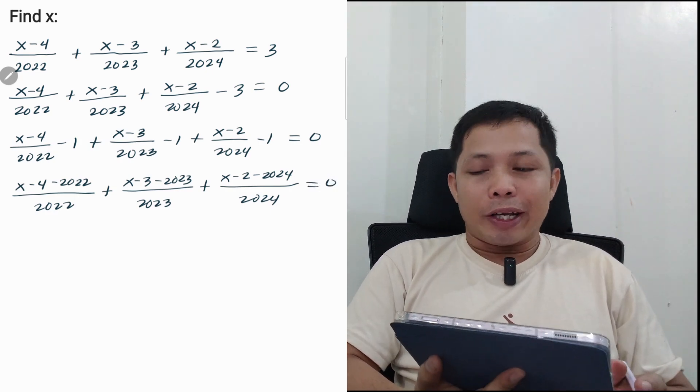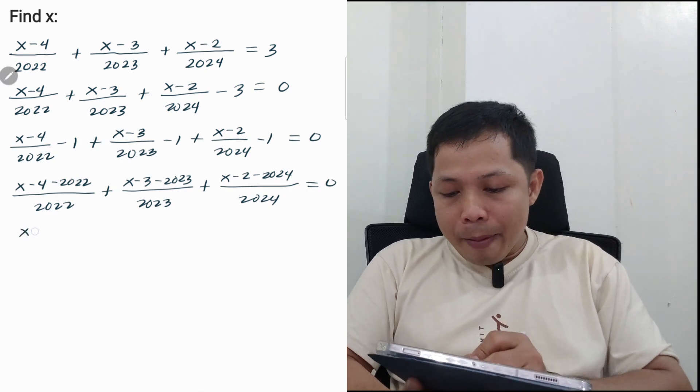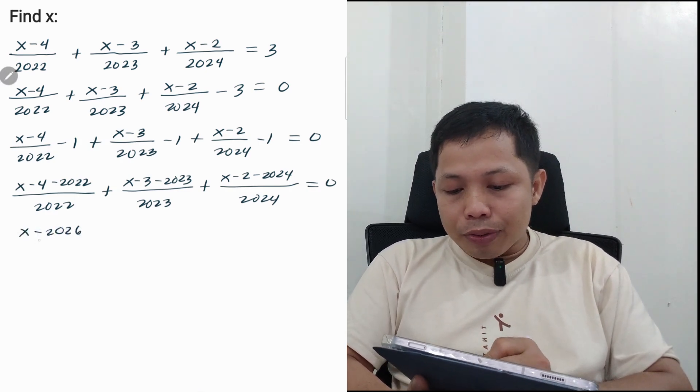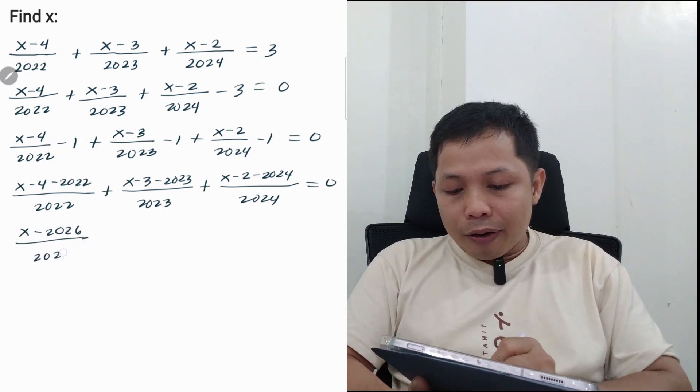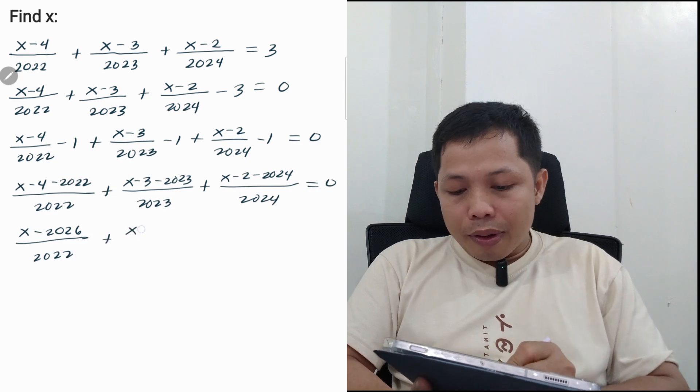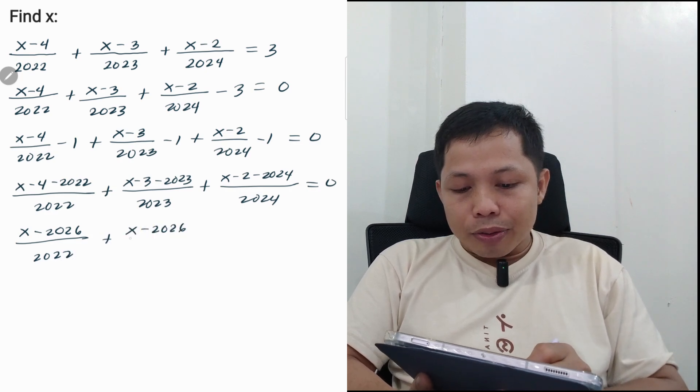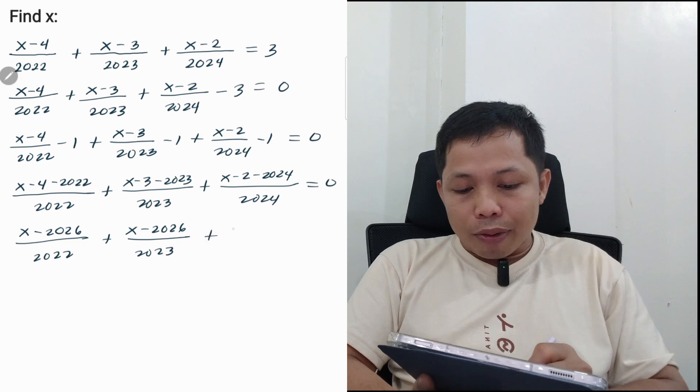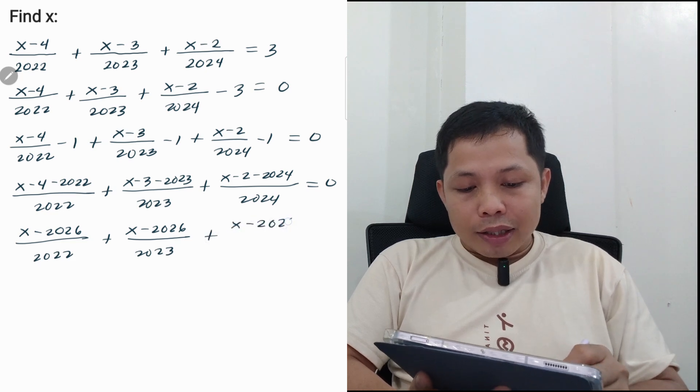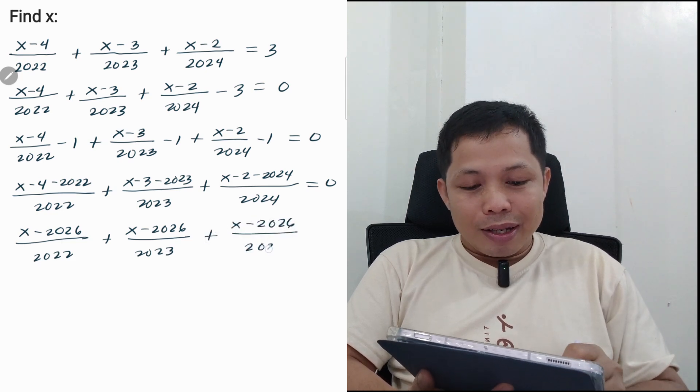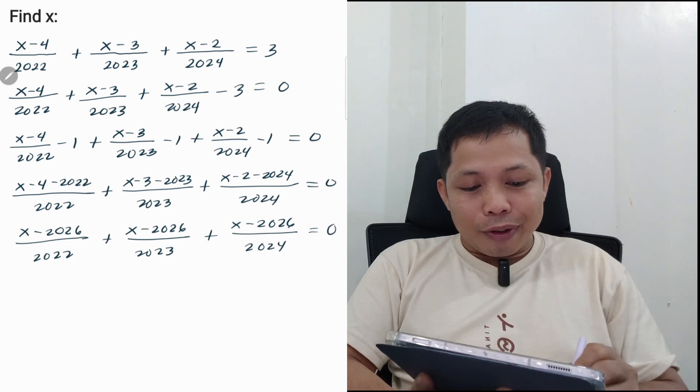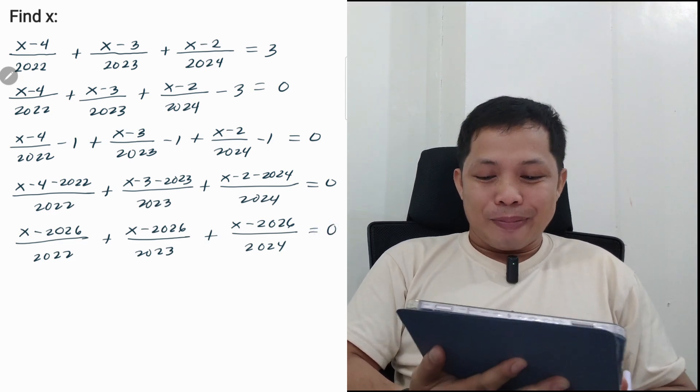Let us simplify the numerators for every term. So we have (x - 2026)/2022 + (x - 2026)/2023 + (x - 2026)/2024 = 0.